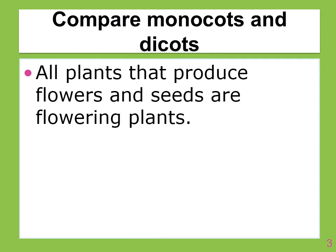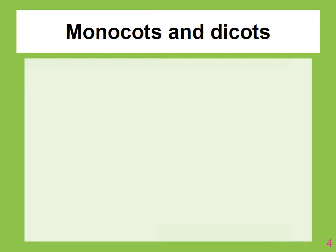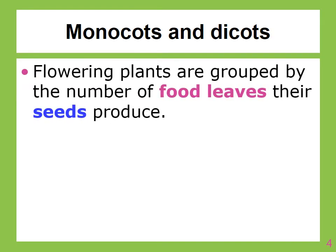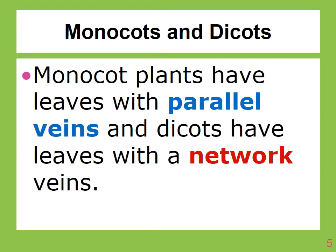All plants that produce flowers and seeds are flowering plants. The seeds they produce may have one or two food leaves called cotyledons. Flowering plants are grouped by the number of food leaves their seeds produce. Those with a single food leaf are called monocots, and those with two food leaves are called dicots.